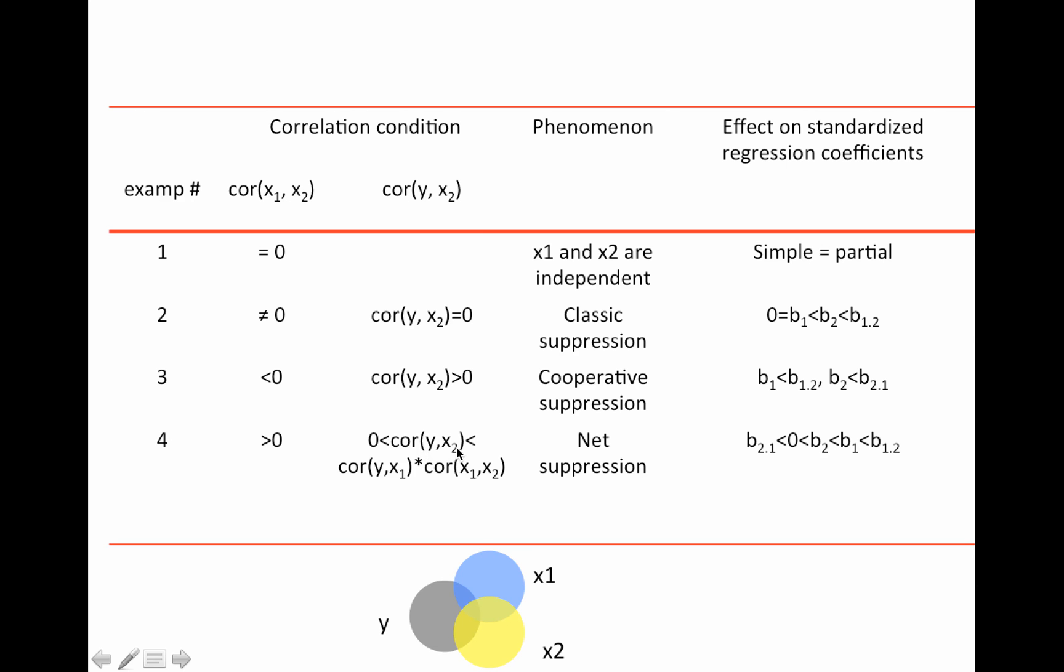When this happens, the parameter estimate by itself is smaller than the adjusted parameter estimate for both Bs. So it's cooperative suppression. Suppression makes the beta get bigger. So now both betas are increasing after being adjusted. Next is net suppression. The correlation between X1 and X2 is now positive. The correlation between Y and X2 is positive and then less than the product of the correlations between Y and X1 and X1 and X2. This correlation is now positive between X1 and X2. I'm just going to say this is complicated. I don't think these are rules you necessarily have to remember. What you find then is now B2.1, the coefficient for X2 when X1 is in the model will be negative.